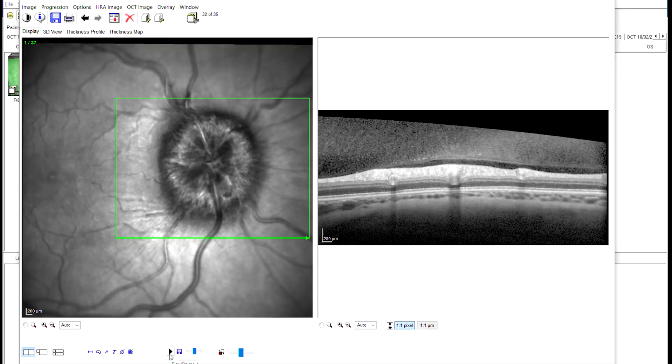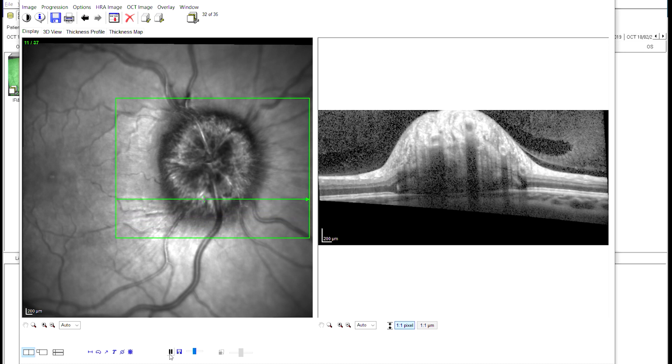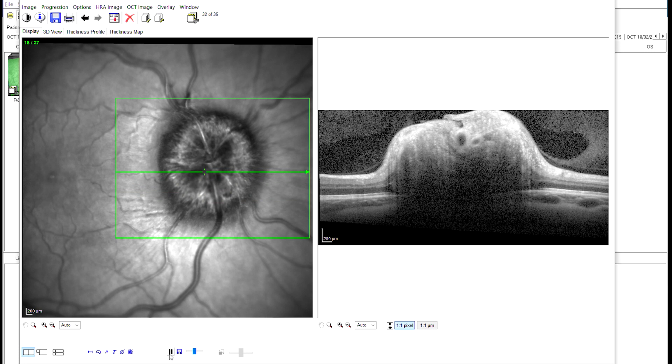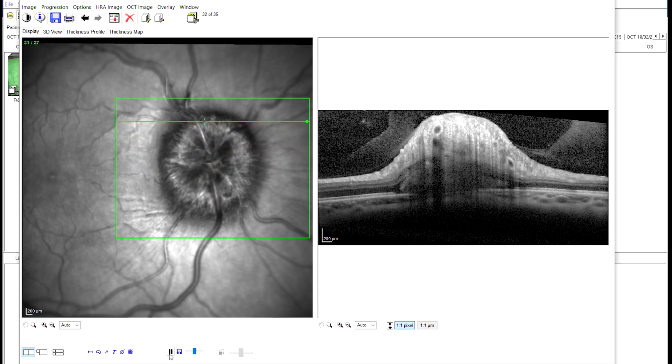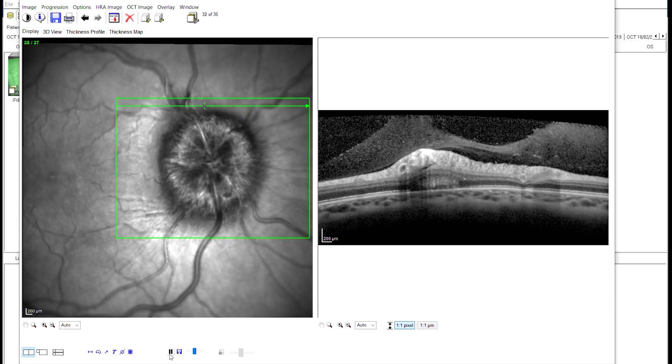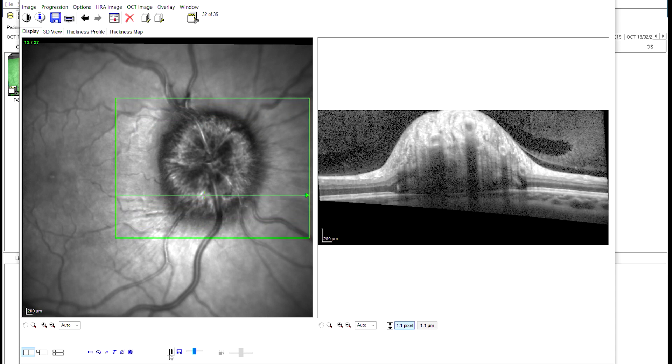Be aware that when scanning a patient with significant papilledema, it is vital to continually adjust the position of the camera to accommodate the increasing size of the OCT image. This is to ensure that the top of the OCT image is not cut off, hence losing the data required to determine peak height of the disc.